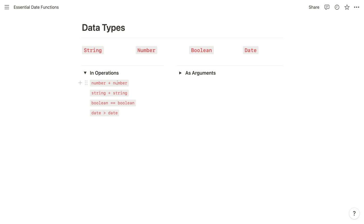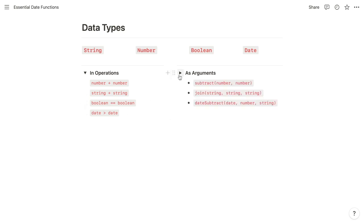You can only add a number to another number, and you can only concatenate a string with another string. A boolean must be compared to another boolean, and dates must be compared to dates. If you try to mix data types in unintended ways, you'll get a type mismatch error, which is the most common error you'll encounter when working with formulas in Notion.